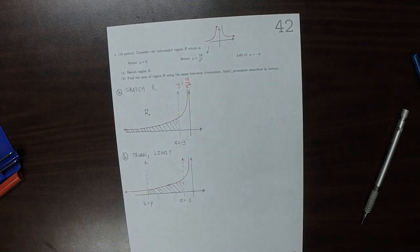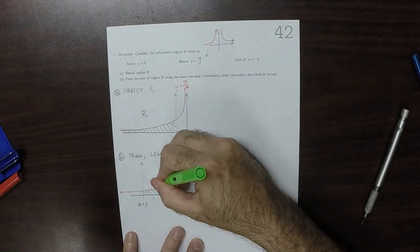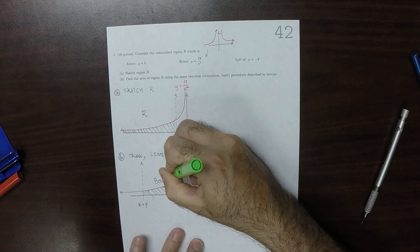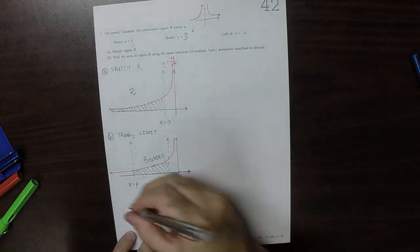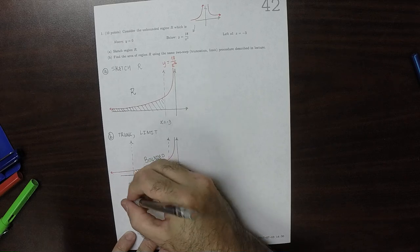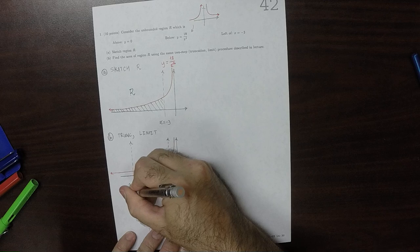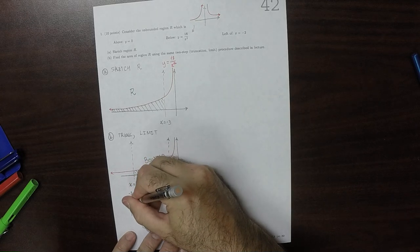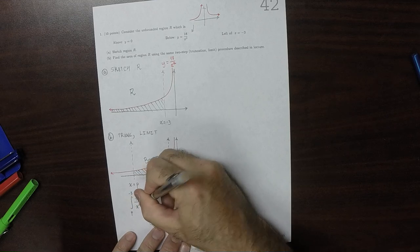From P to negative 3, notice that this particular region is bounded. Well, let's figure out its area. This area is integral from P to negative 3 of 18 over x squared dx.